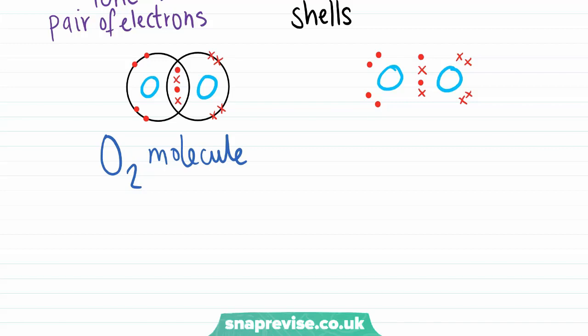Again, the electrons from this oxygen atom have been drawn as dots, and the electrons from this oxygen atom have been drawn as crosses, clearly showing that each oxygen atom originally had six electrons in its outer shell.